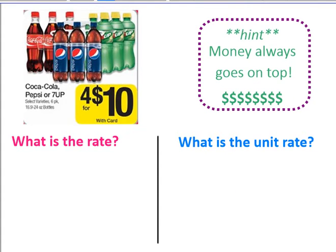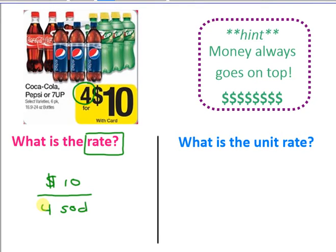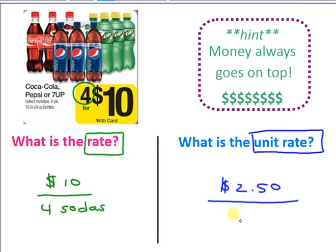Let's try this example. What is my rate? It's going to be $10 for four sodas. Now, what is my unit rate? That's going to be $2.50 for one soda. My unit rate, meaning one, needs to be on the bottom.